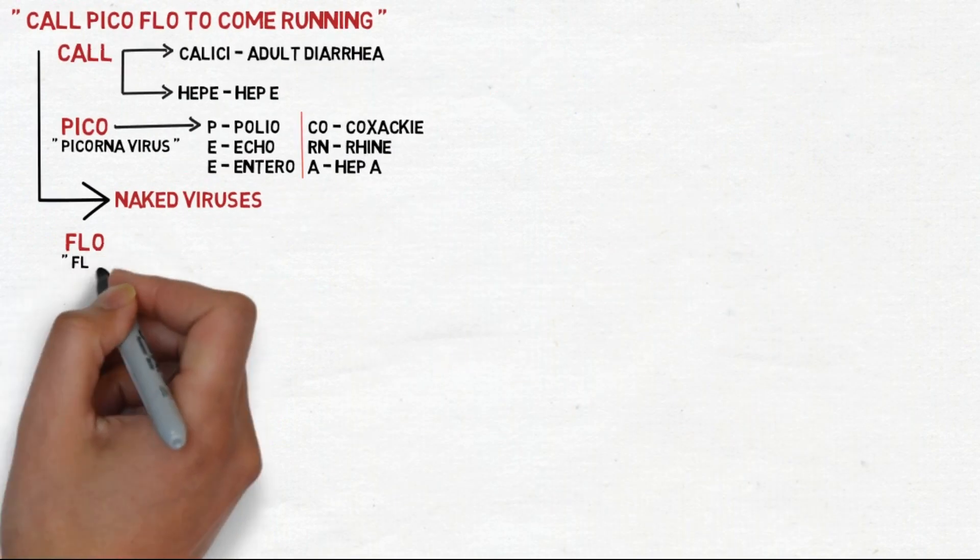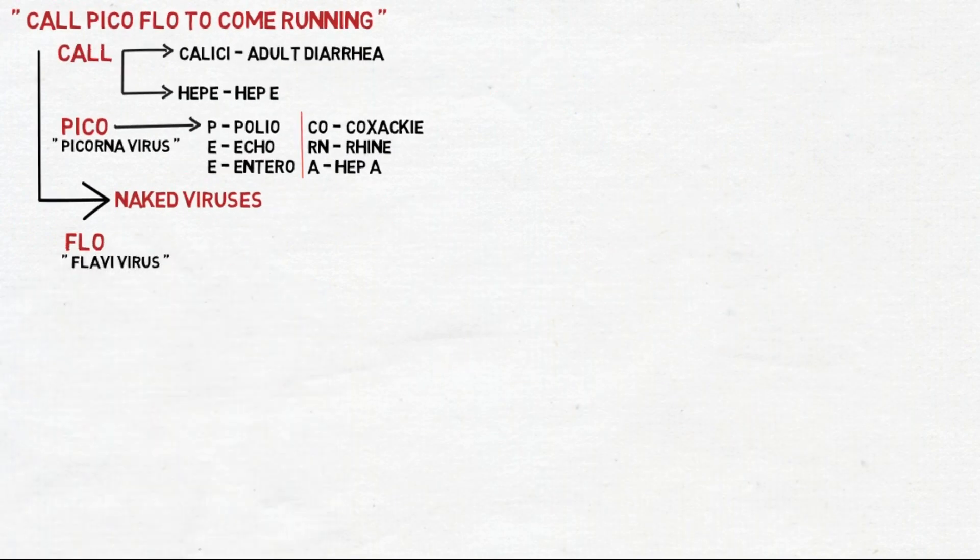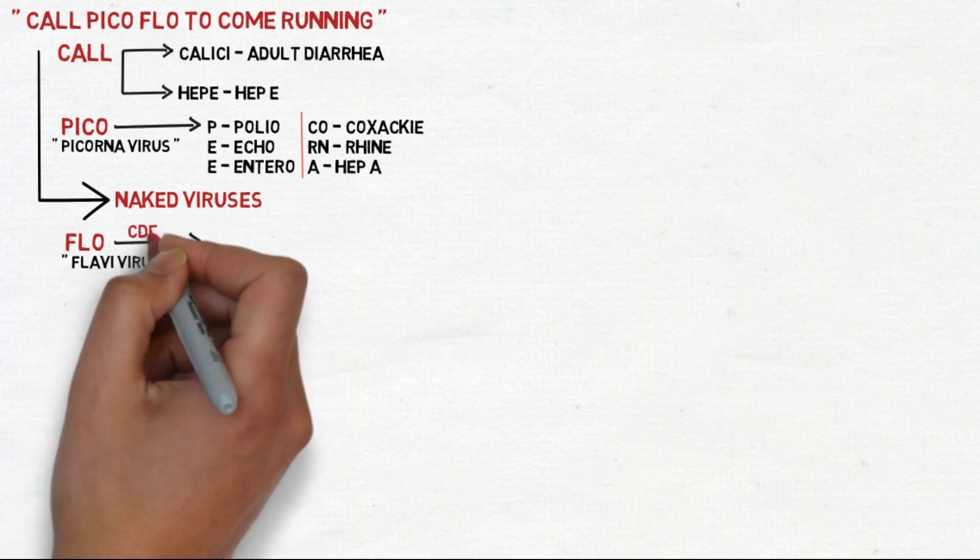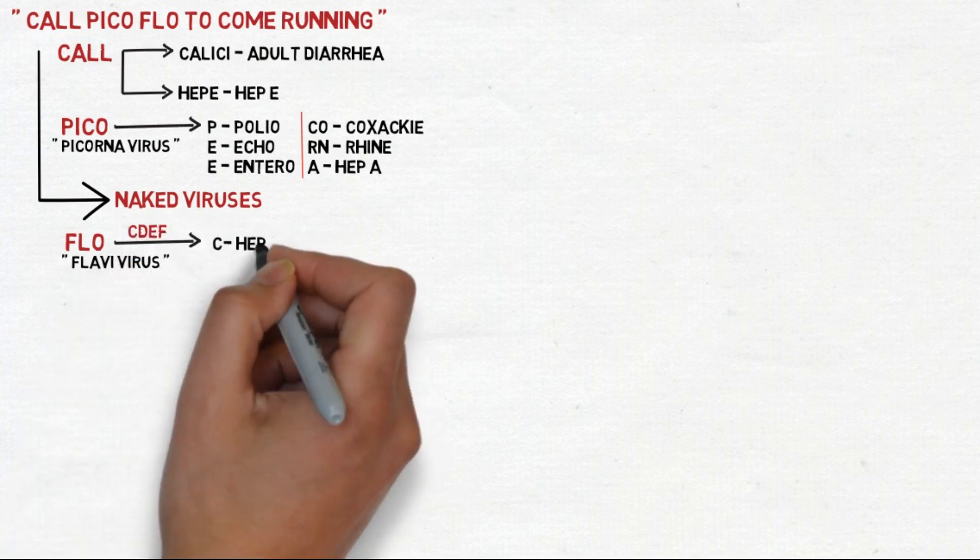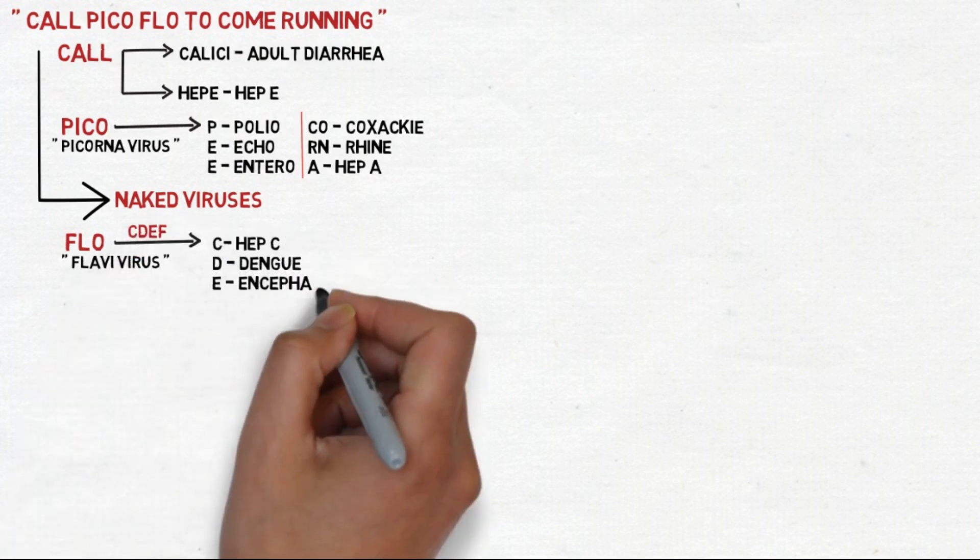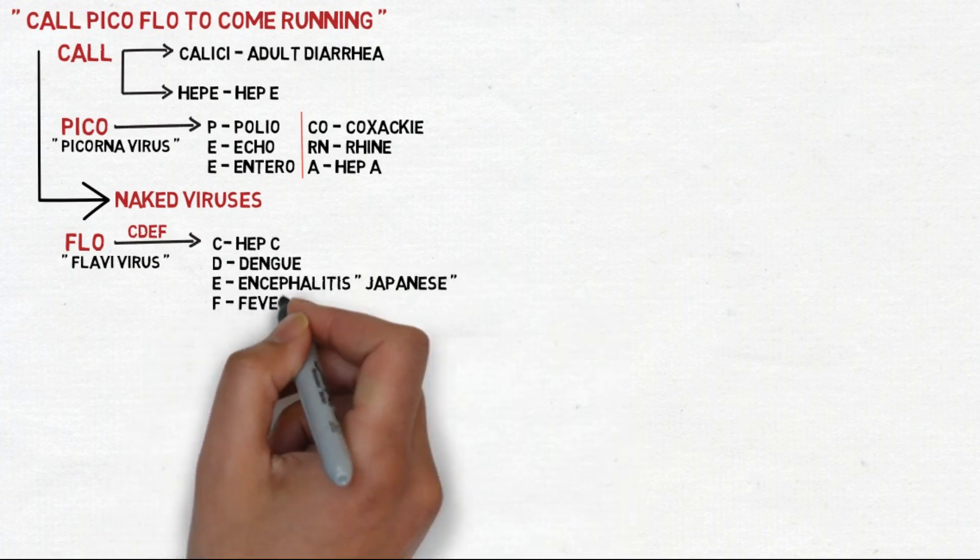Moving to FLO, which stands for Flavivirus, it has an easy mnemonic consisting of the letters C-D-E-F: C for Hepatitis C, D for Dengue, E for Japanese encephalitis, and F for yellow fever.